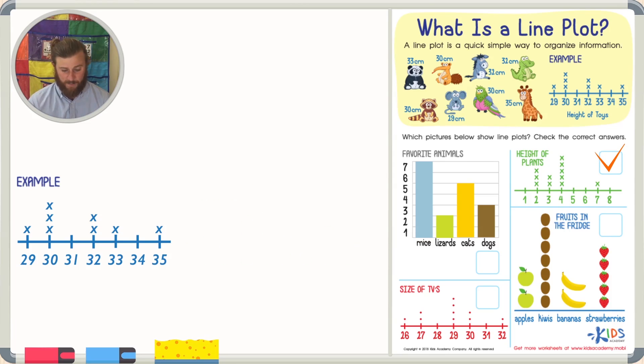Let's look at our next picture. Our next picture has the numbers on the bottom and has the title of the graph, size of TVs. So using this graph, I can see that one TV is 26, another TV is, two TVs are 27 because there are two dots.